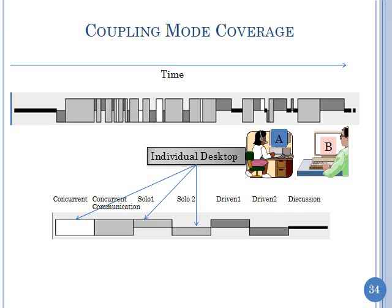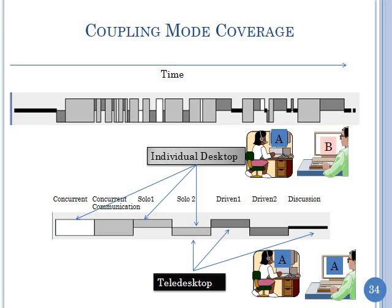Some modes are supported only by coupled teledesktops, some by uncoupled individual desktops, and some by teledesktops where one person's computer is seen by another. The concurrent communication mode is specific to coupled teledesktops. So the question was: do people actually use all these modes, or would they simply have one person work while the other watches, or just do their own thing without ever collaborating?